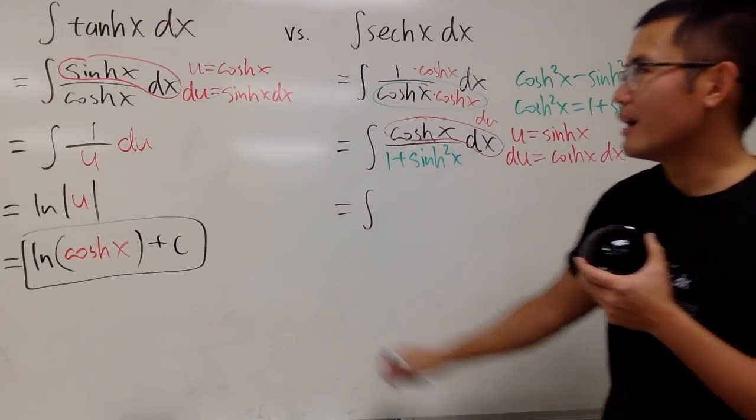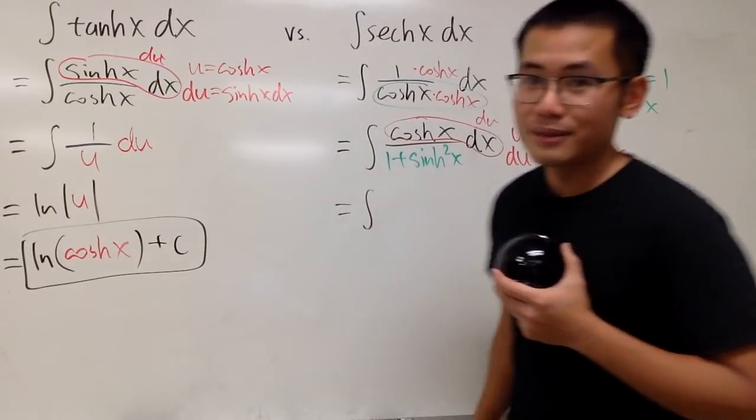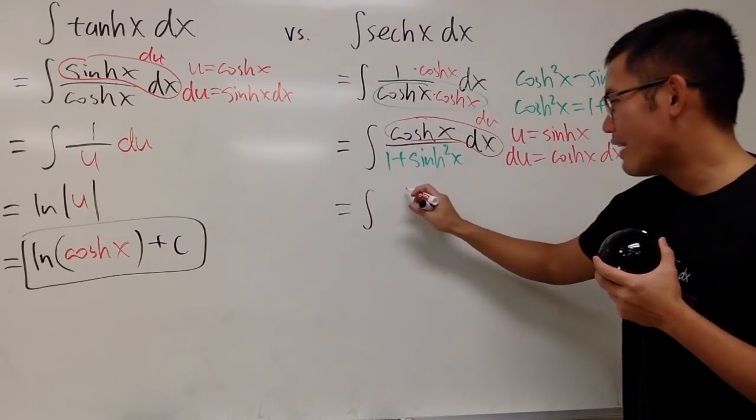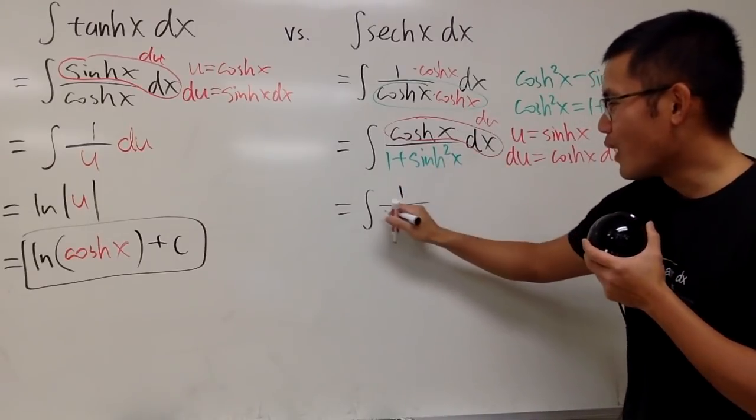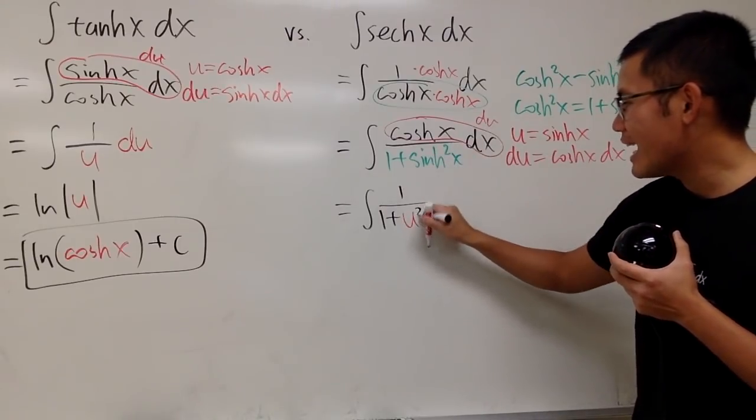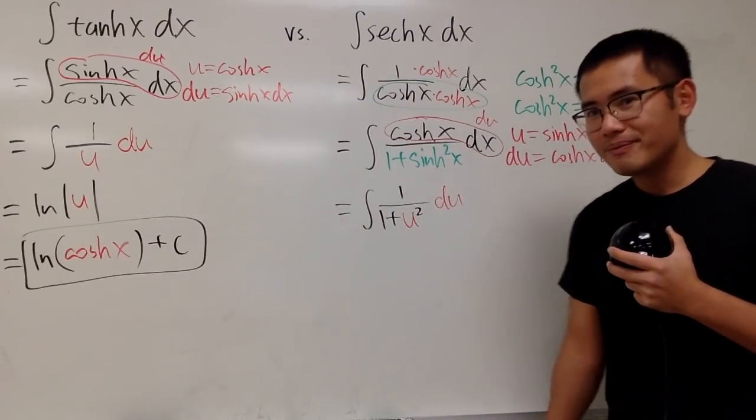So now this is the integral. I'll put the du right here just to be consistent. This is the du on the side. We have 1 on top over 1 plus sinh, which is our u. So I'll put down u squared. When we integrate 1 over 1 plus u squared in the u world, this gives us the inverse tangent.